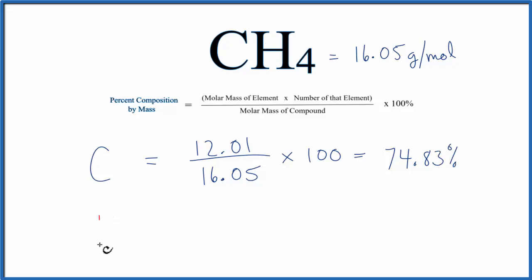Let's do the hydrogen. Hydrogen has a molar mass of 1.01 grams per mole, but we have four hydrogens, so the number of the element, that's four. We divide that by the molar mass of the compound, that's that 16.05, multiply by 100, and we end up with the percent composition of the hydrogen in the CH4 molecule to be 25.17%.